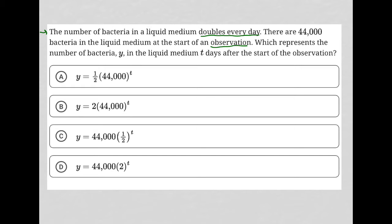There are 44,000 bacteria in the liquid medium at the start of an observation. Okay, so that means the next day it'll be 88,000, the next day 88,000 times two, and then times two, like each day it doubles based upon what we've read so far.